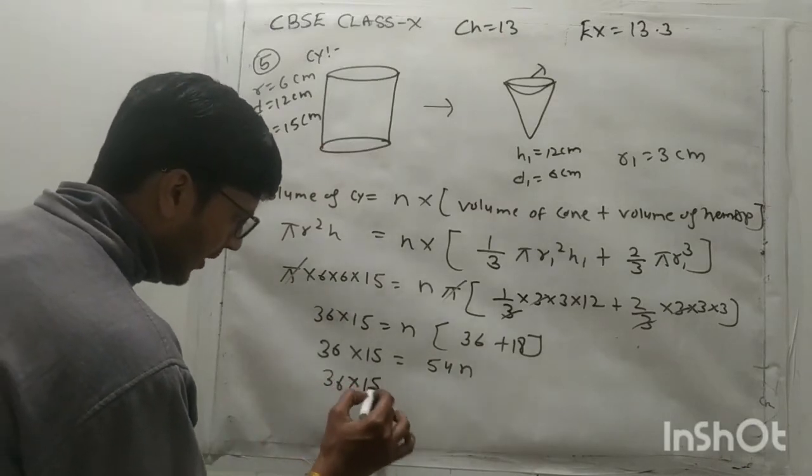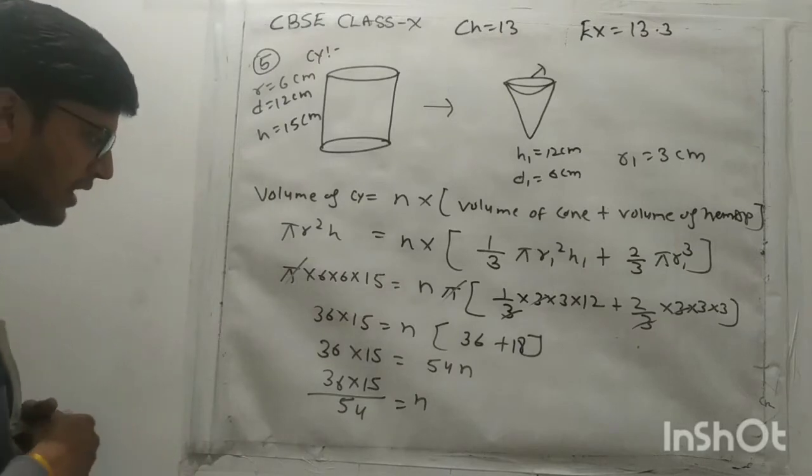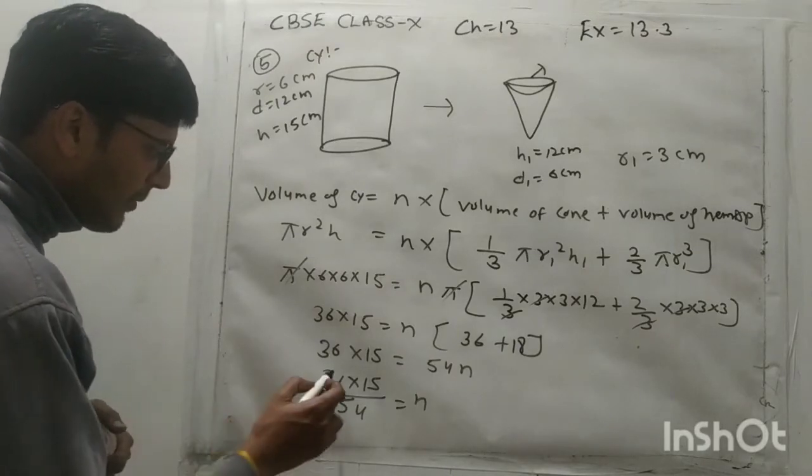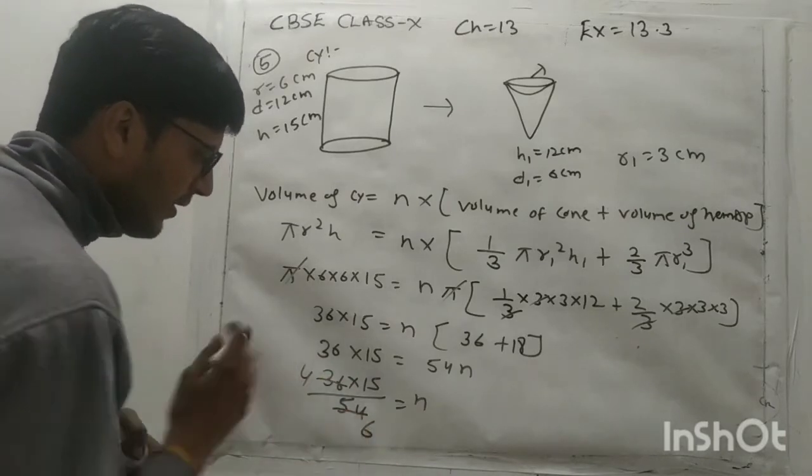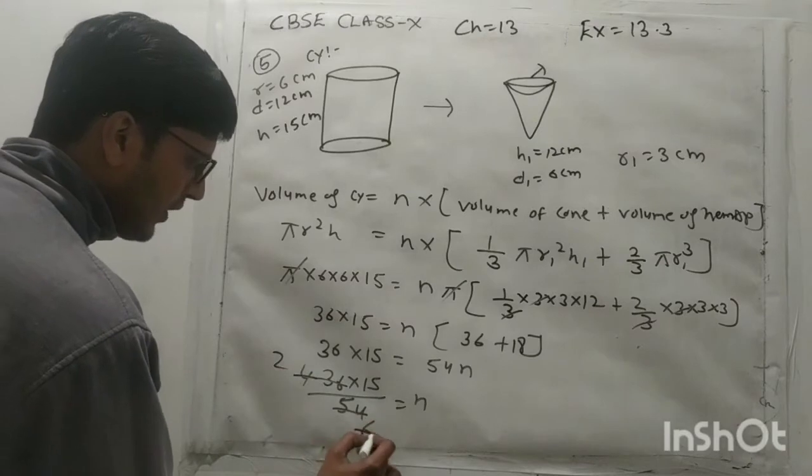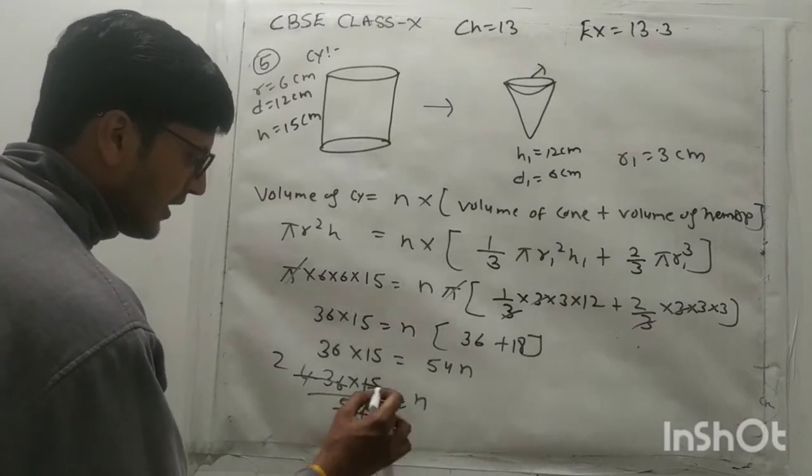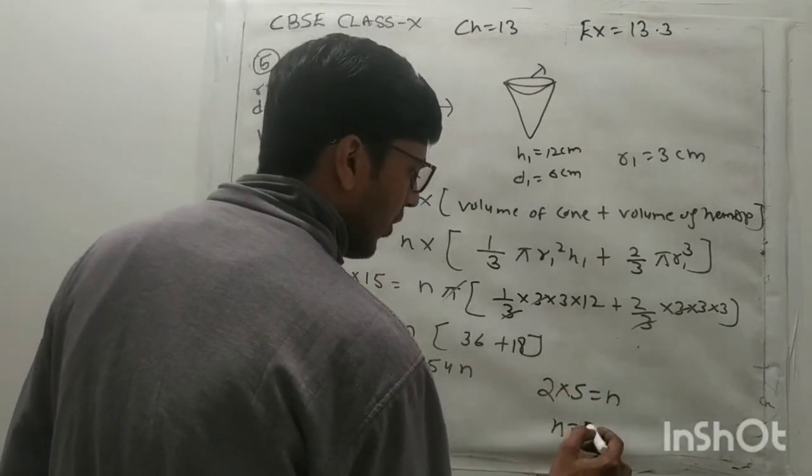So simply pi se pi cancel out. It becomes 36 into 15 equal n. 3 se 3 cancel out, it becomes 12, 3s are 36. Yaha pe aapka 3 se 3 cancel out, 3 3s are 9 to the 18. So it becomes 36 into 15 equal, it becomes 54 n. So 36 into 15 upon 54 equal n. Now cancel out 9 ki table se. So 9 4sa and it is 9 6sa. Then 2 ki table se, so 2 or ye kitna 3. Then 3 ki table se kitna 5. So remaining is 2 into 5 equal n, so n equal what, 10.